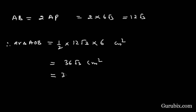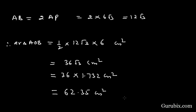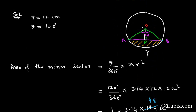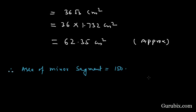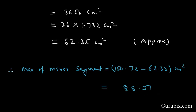Now we can find the area of the minor segment by subtracting the area of triangle AOB from the area of sector AOAB. Therefore, area of minor segment = 150.72 − 62.35 = 88.37 cm². This is the solution of the question.